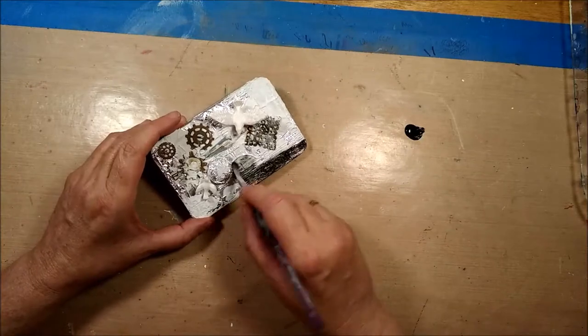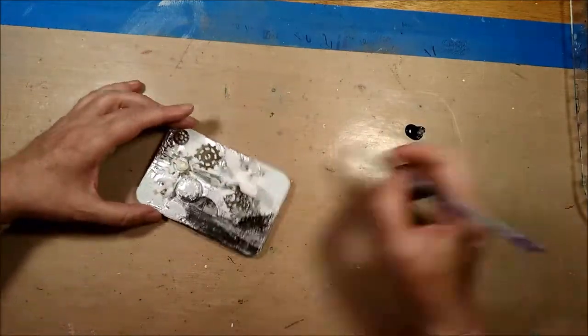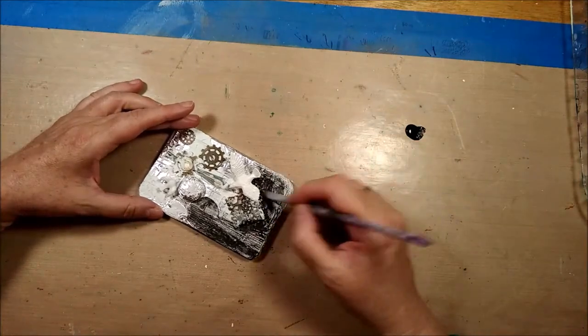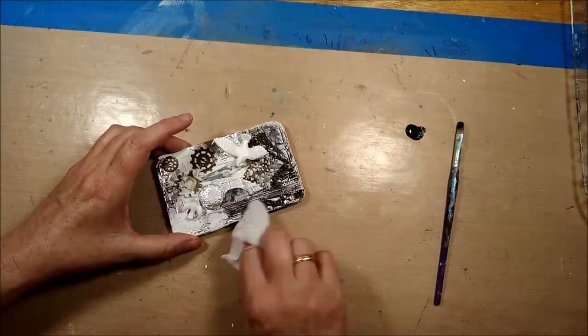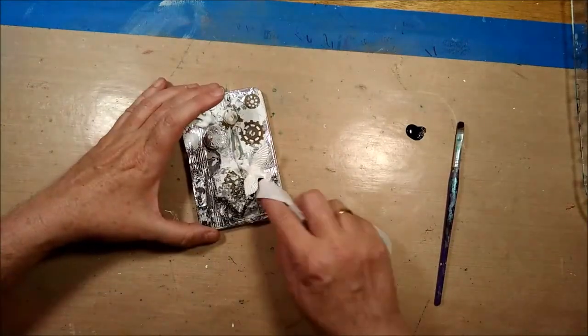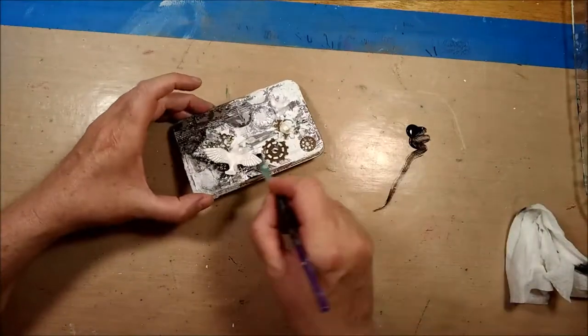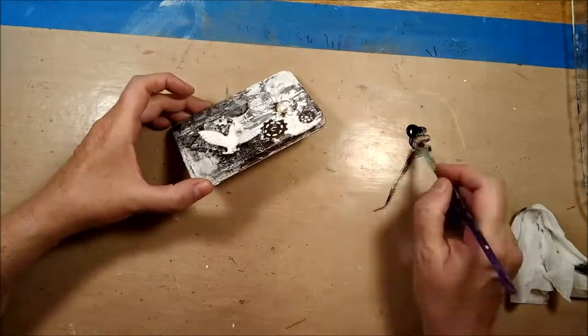This is just black acrylic paint and I just want to bring out the texture some. Now I don't want it too dark, I don't want it too black, so I'm doing a little area at a time and then use my baby wipes to take some of the extras of the paint off.